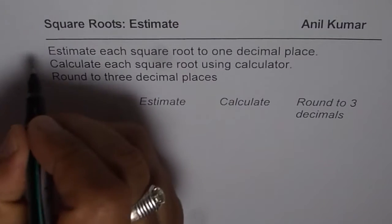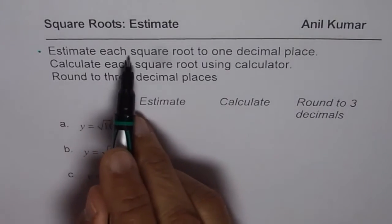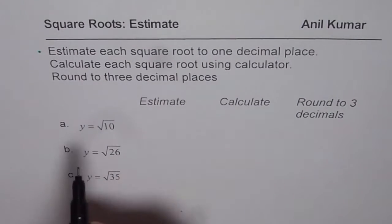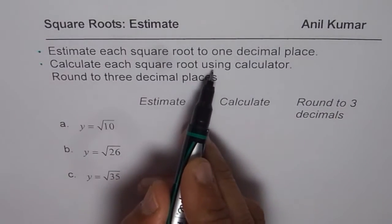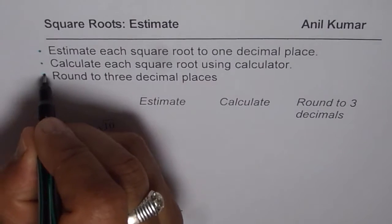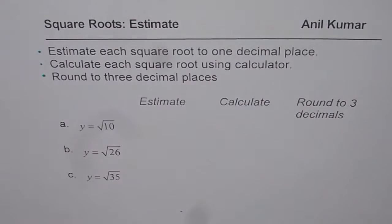The first part is to estimate each square root to one decimal place. The second part is to calculate each square root using a calculator, and then we will round these to three decimal places. These are the three things we will do for the given numbers in this video.